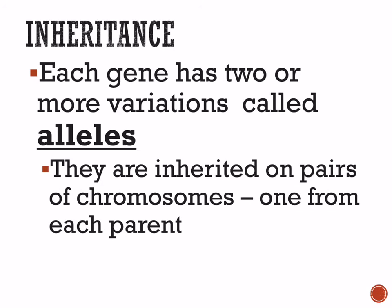Here's what we know now based on Mendel's work. We know that each gene has two or more variations — we call these variations alleles. That's the first of many vocabulary terms in this lesson. These alleles are inherited on pairs of chromosomes; we've already talked about chromosomes being diploid, and these chromosomes come one from each parent, so you get two alleles, one from each parent.